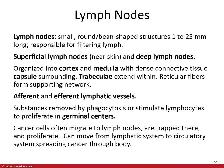Moving on to lymph nodes: lymph nodes are the only lymphatic structure to filter lymph. They are small, round, bean-shaped structures, 1 to 25 millimeters long, responsible for filtering lymph and removing bacteria and other materials before putting it back into blood circulation. There are two categories: superficial lymph nodes, near the skin, and deep lymph nodes. They are organized into cortex and medulla with dense connective tissue capsules surrounding them, with trabeculae that extend within and reticular fibers forming a supporting network.